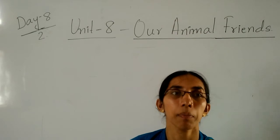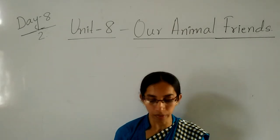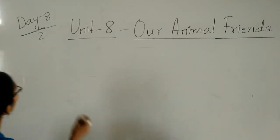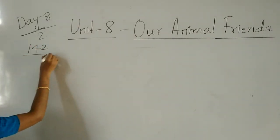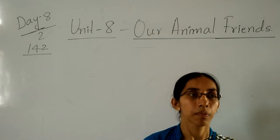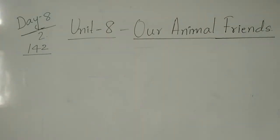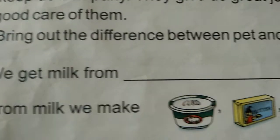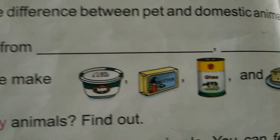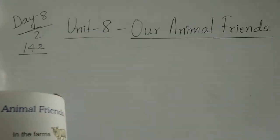So these are all the things we discussed in the previous class. Now we will do textbook page number 142. Open the page. Take a pencil. See there — what do they ask? 'We get milk from dash.' Tell me, children. You will get milk from — yes — cow and buffalo. Good. Very good. Write that.